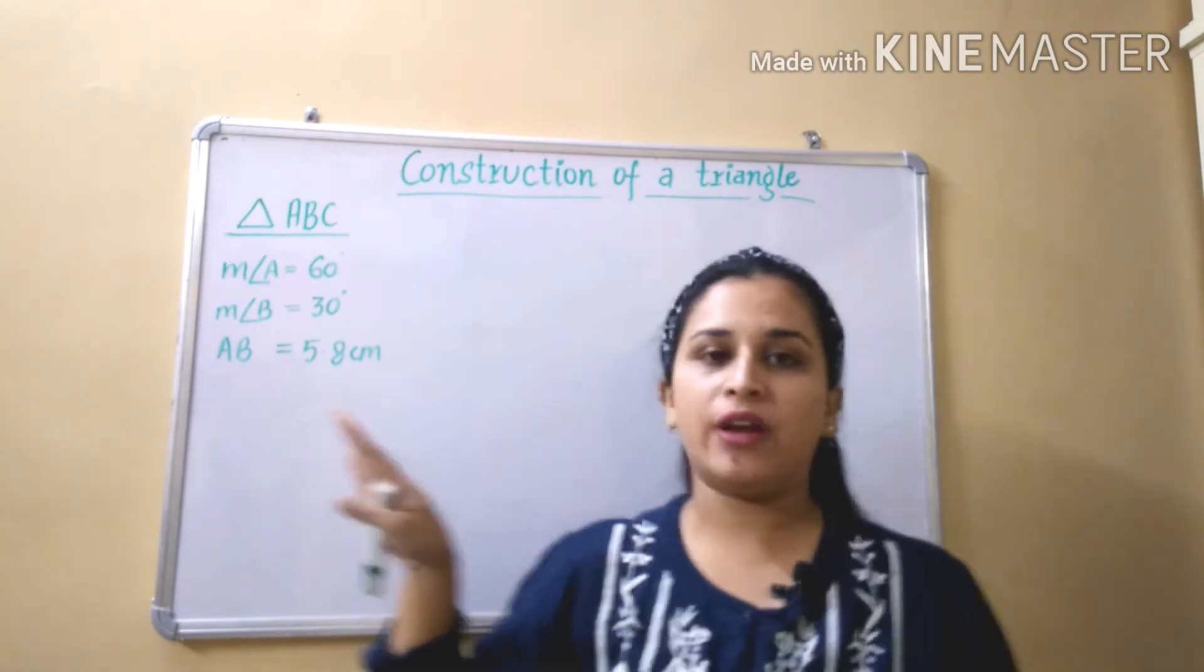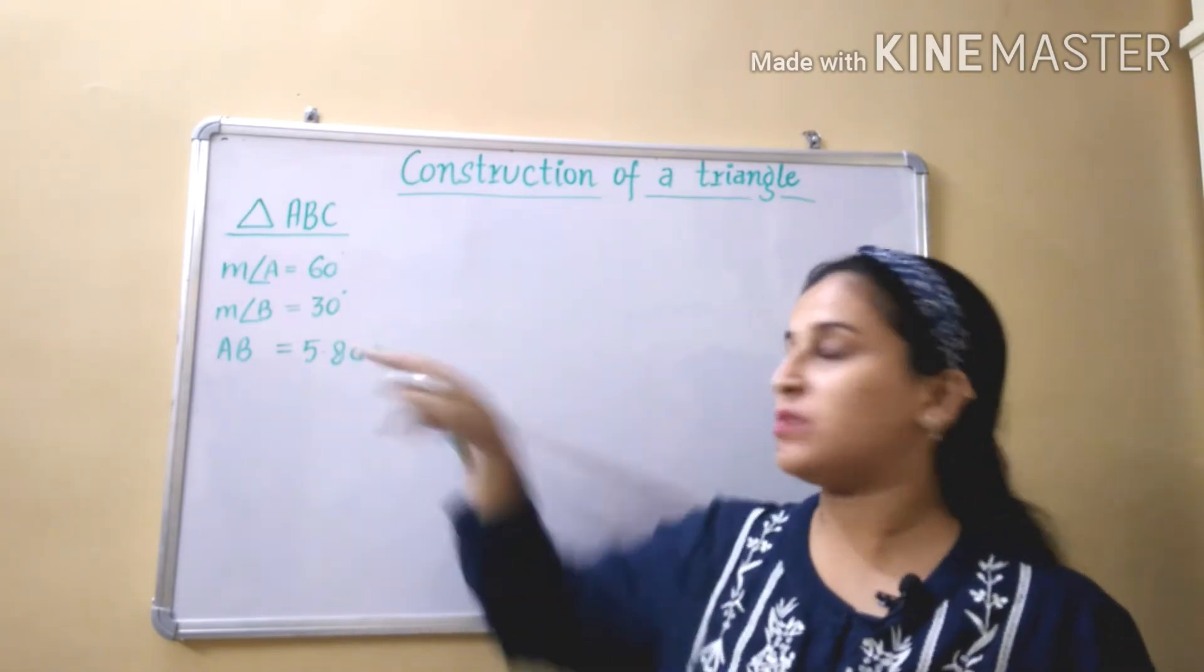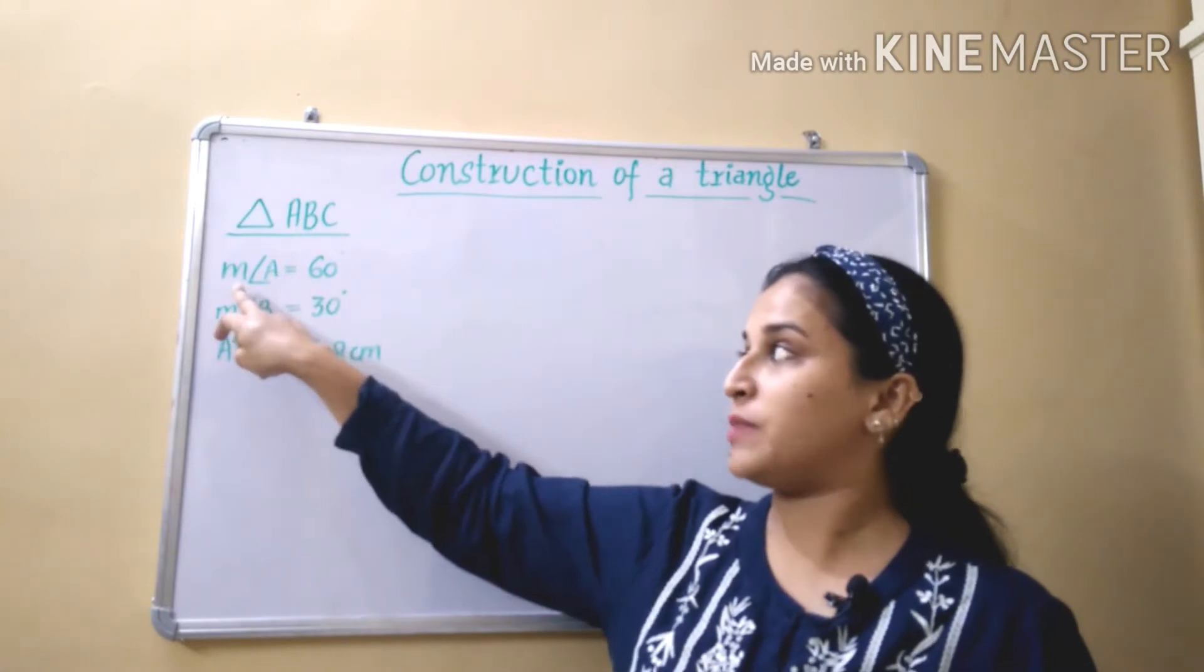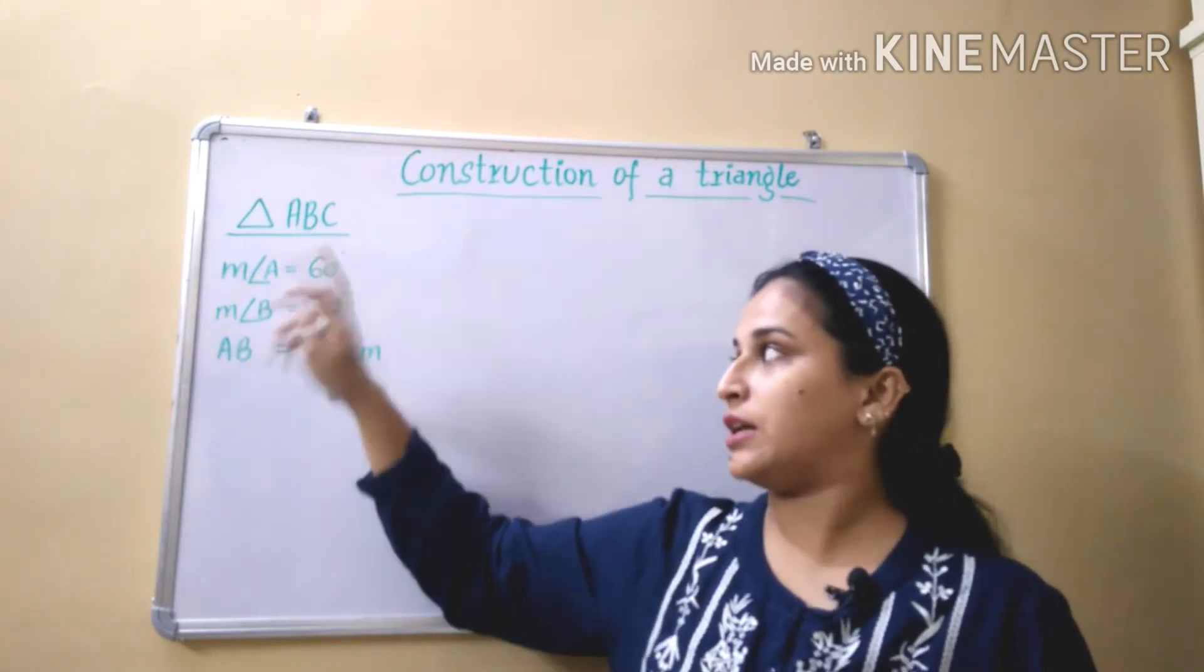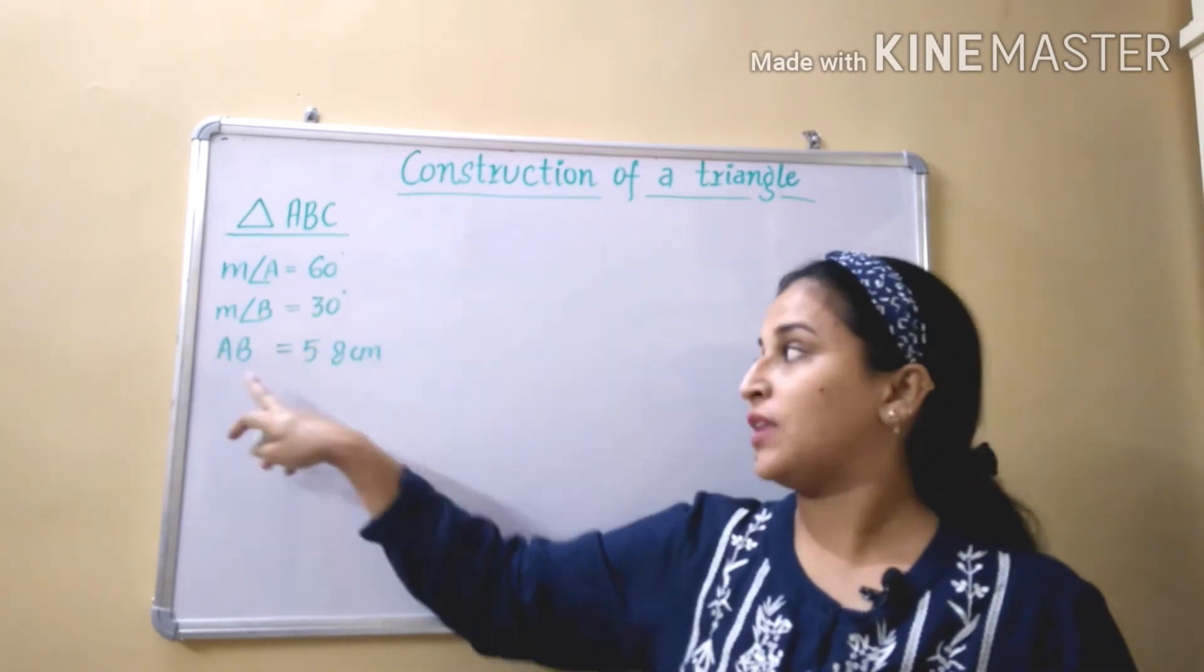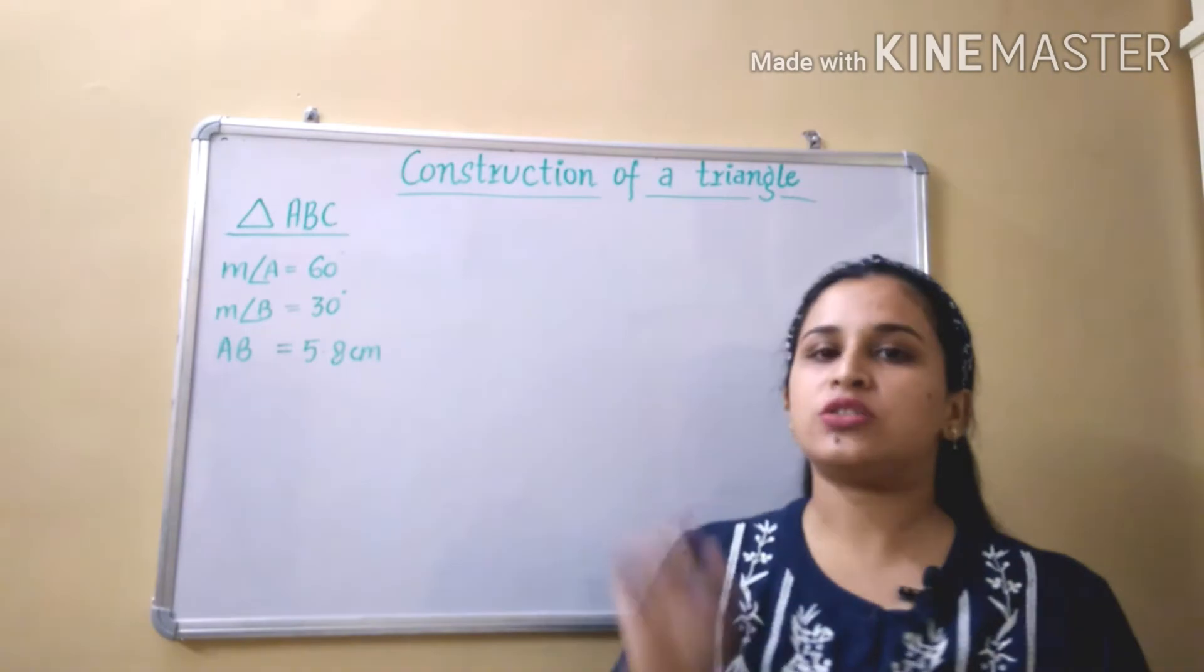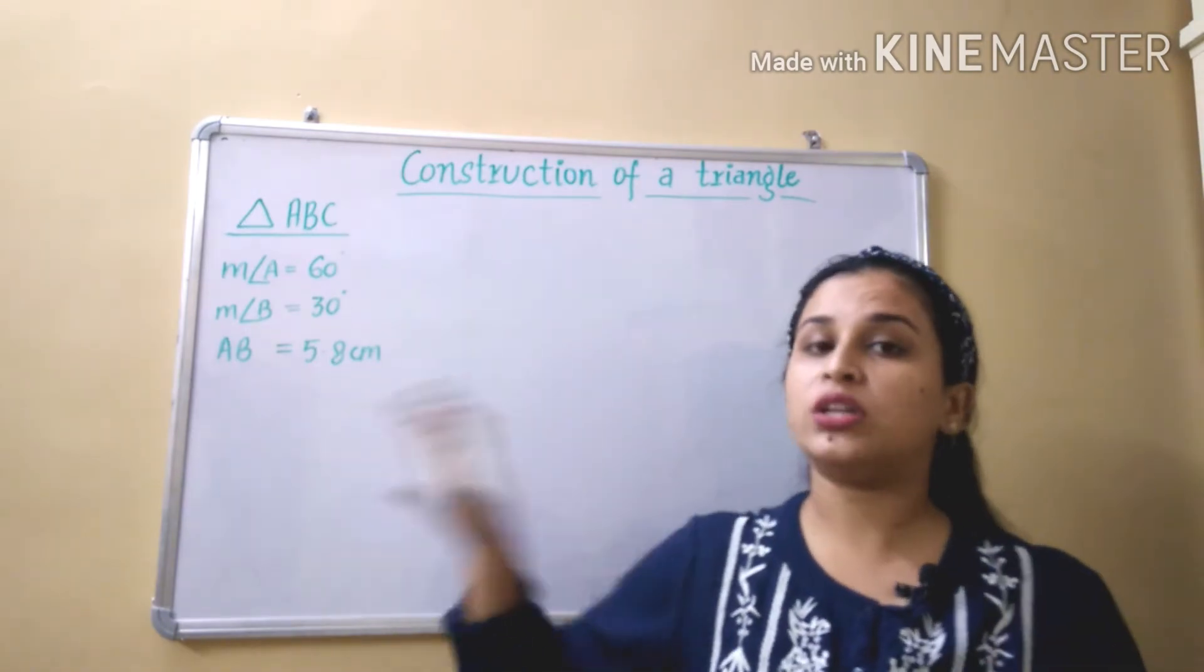First of all, whenever we have to draw or construct any triangle, we must have the base measurement. Here the question gives us measurement of angle A is 60 degrees, measurement of angle B is 30 degrees, and AB is equal to 5.8 cm. So whenever we are going to start to construct the triangle or any shape, we must draw the rough sketch.